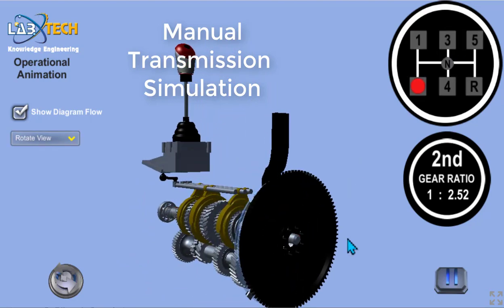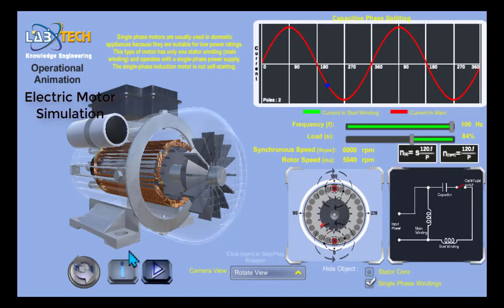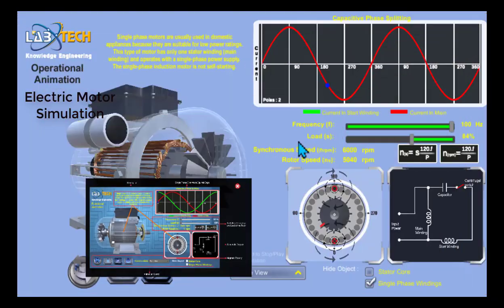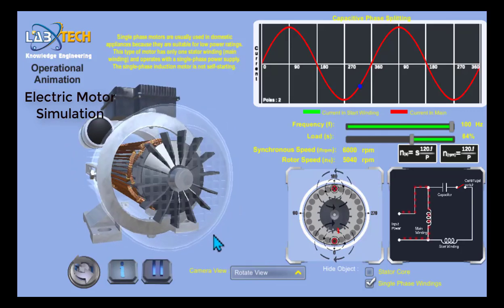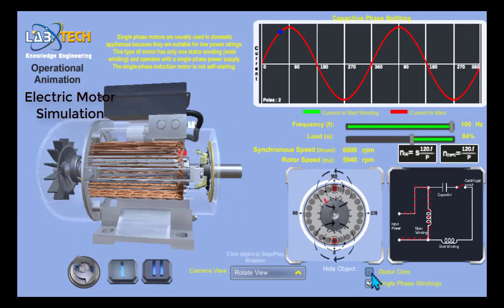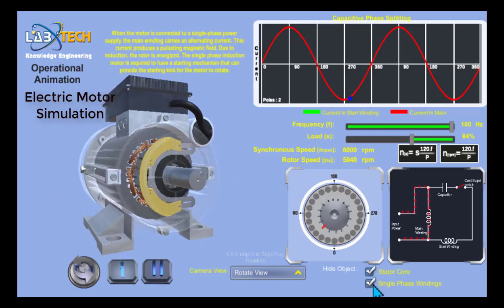Here's another favorite of mine. This is electric motor simulation. Almost all of our simulations contain instructions on how the controls work. As they are different according to different types of technologies, we use different features that we can adjust. Here we can look at different elements and layers of the stator core and the single phase windings.